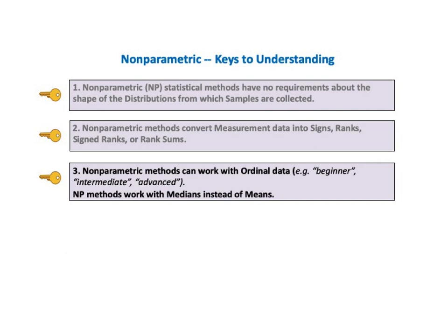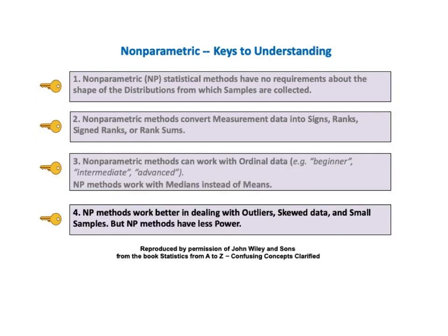Key number three says nonparametric methods can work with ordinal data — for example, beginner, intermediate, and advanced — and nonparametric methods work with medians instead of means. Key to understanding number four says NP methods work better than parametric methods in dealing with outliers, skewed data, and small samples, but NP methods have less power.